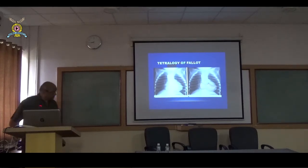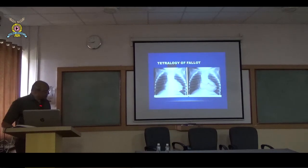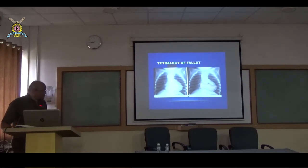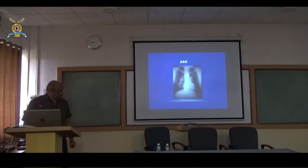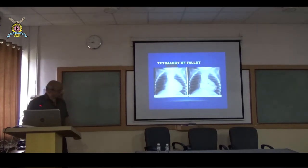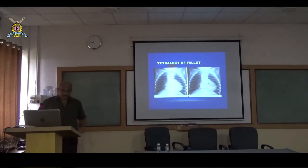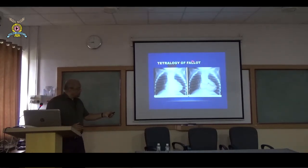Look at this heart — there is borderline cardiomegaly. The apex of the heart is pushed upwards, tilted — this is right ventricular enlargement. Look at the lung fields: there is hardly any pulmonary vasculature compared to the previously shown prominent pulmonary vasculature. These are oligemic lung fields. The diagnosis is tetralogy of Fallot.